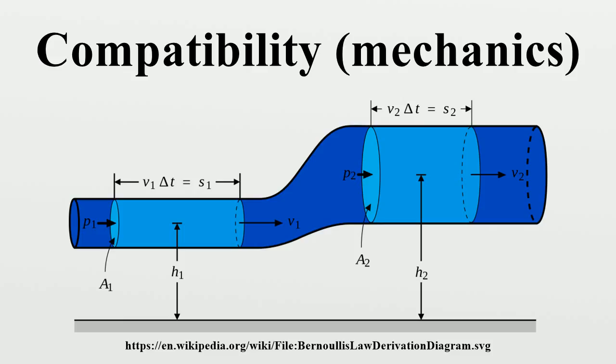The compatibility condition for the right Cauchy-Green deformation tensor can be expressed in terms of the Christoffel symbol of the second kind. The quantity represents the mixed components of the Riemann-Christoffel curvature tensor.